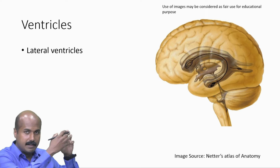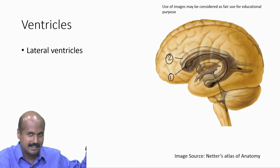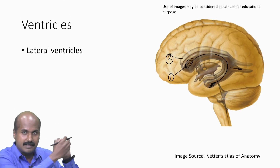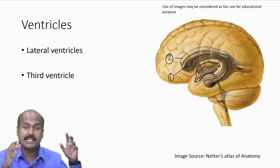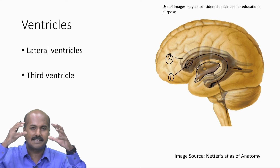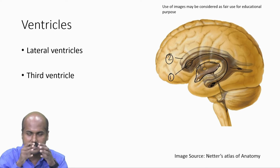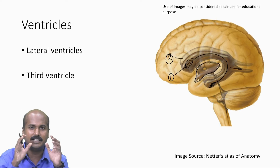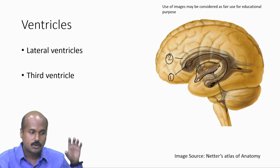Between and below these two lateral ventricles, there is another ventricle called the third ventricle. The third ventricle is a single ventricle present in the diencephalon, which is another part of the brain. The diencephalon, meaning 'between brain', is relatively hidden — you cannot see it clearly from the outside, as it is located within the core of the brain.